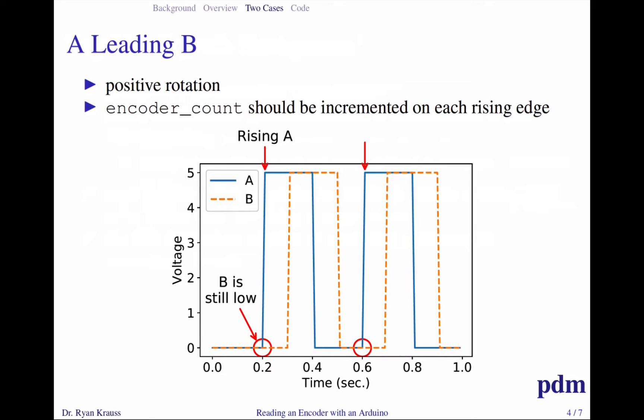You've got a transparent or reflective part and then an opaque or non-reflective part that are causing these signals. The A channel is this blue channel, the dashed orange channel is the B channel, and this would show A leading B, or A going first, which might be considered positive rotation. We're going to have the Arduino respond on the rising A edges, so there's two of those. Because A is going first, A goes high and B is still low because B switches at a later point in time.